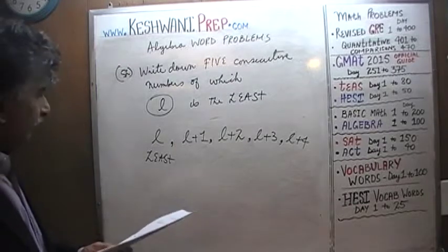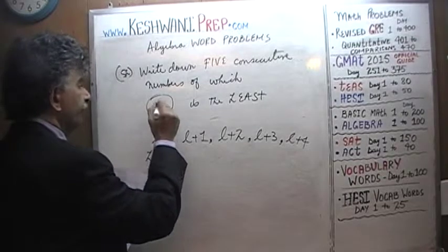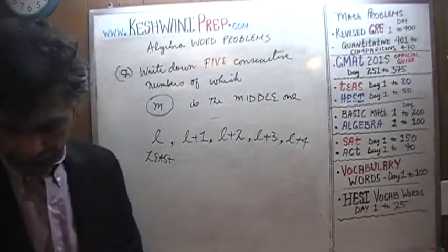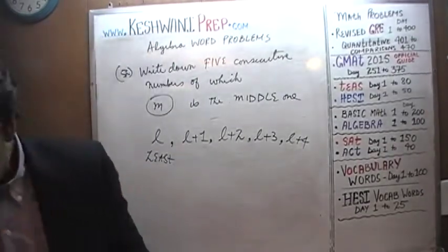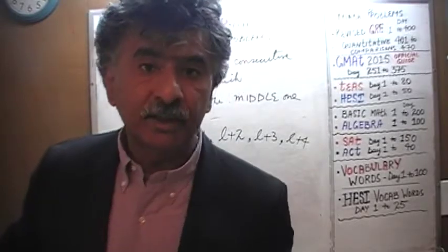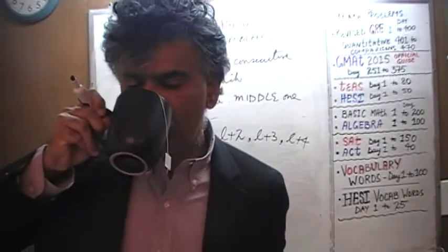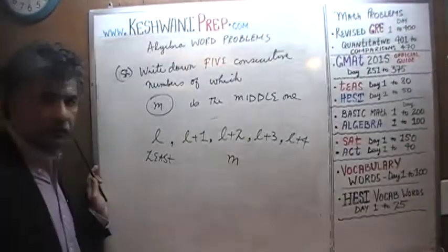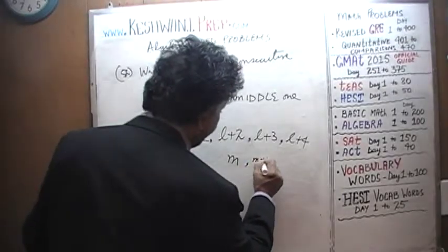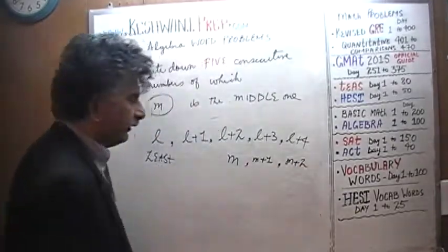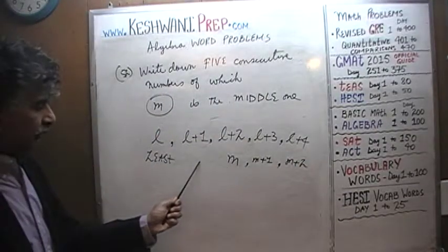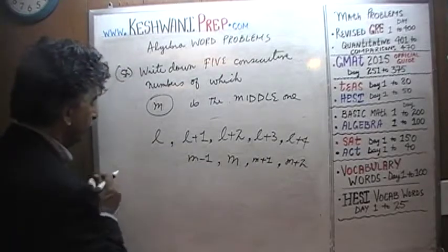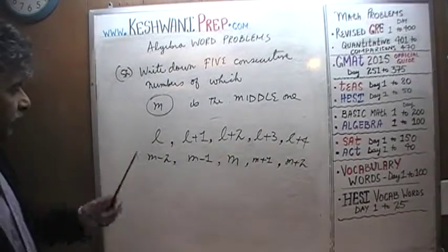Write down 5 consecutive numbers of which M is the middle one. Since M represents the one in the middle, put M right in the middle. The one after that is M plus 1, and the one after that is M plus 2. The one that comes before the middle number is M minus 1, and the one before that is M minus 2. That's the answer — M is the middle number.